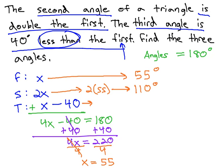The third angle is x minus 40. We found x to be 55, so 55 minus 40 will give us our last angle of 15 degrees.